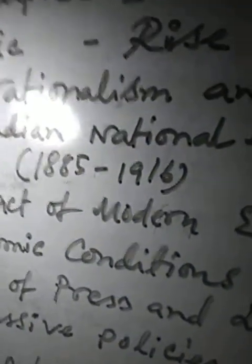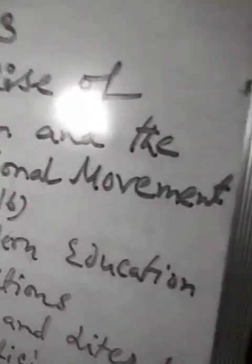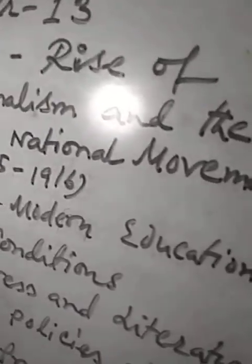The points I have mentioned on the board — there are five points — I shall explain them one by one with copious examples. Please look at the board. The name of the topic is: Rise of Indian Nationalism and the Indian National Movement, 1885–1916.